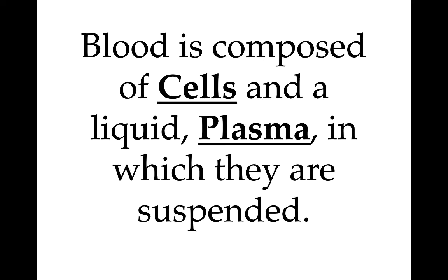Blood is actually made of two different parts: there are the cells, and then there's the liquid, which we call plasma. In order to understand how we use blood in forensics, we have to understand what it's made of and what those parts are, so you can understand how we use them to potentially solve crimes.